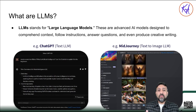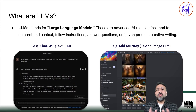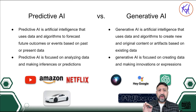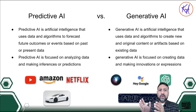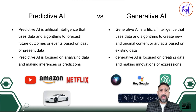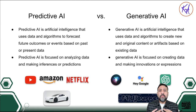Now we understand LLMs. Let's understand what generative AI is. The easiest way to understand generative AI is to contrast it with predictive AI. Both predictive and generative AI are types of artificial intelligence that use large language models. Predictive AI uses data and algorithms to forecast future outcomes based on past or present data — for example, the next best product recommendation on Amazon, the next movie you'd want to watch on Netflix, or a support chatbot providing product solutions. These are all examples of predictive AI.